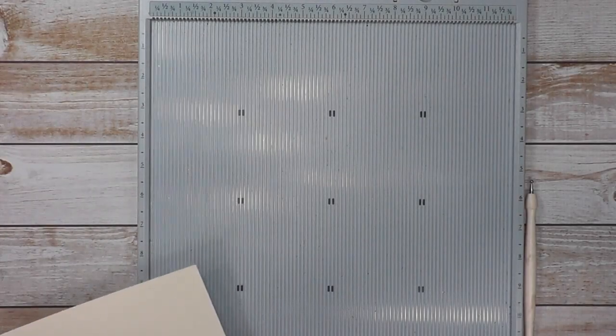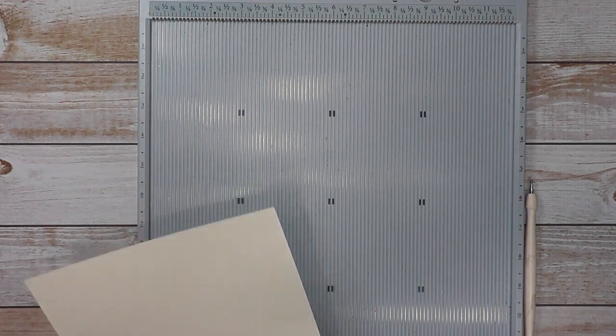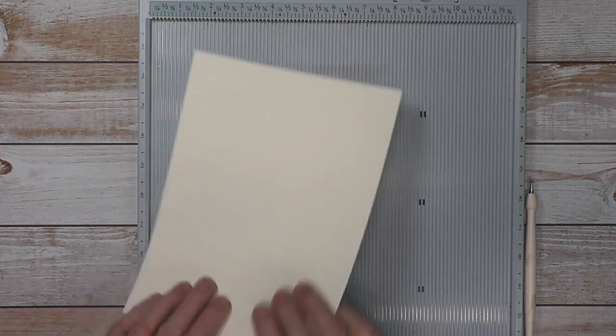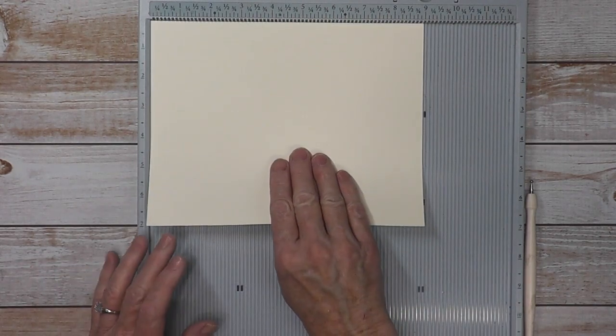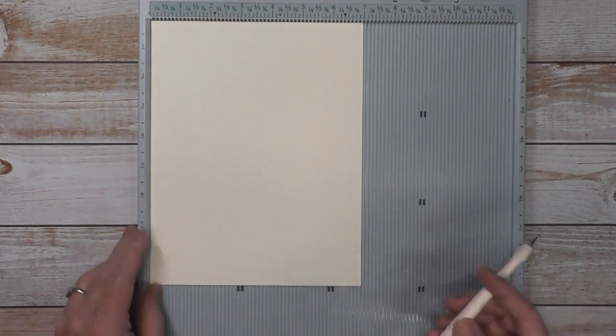For the base pages of the album, we're going to make three page sets. You need to cut three that are 7 inch by 9. You're going to put the 7 inch on all three sets, three of these base pages.